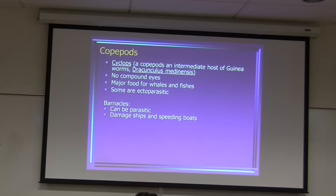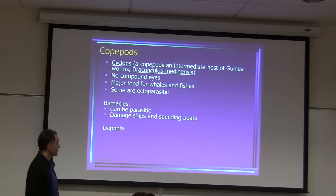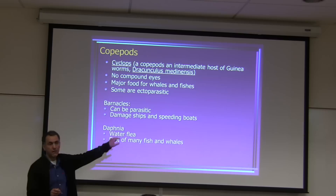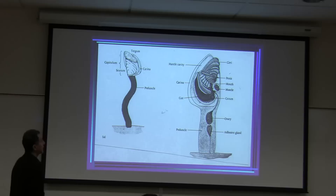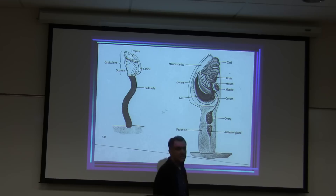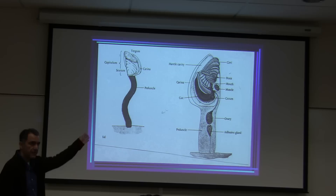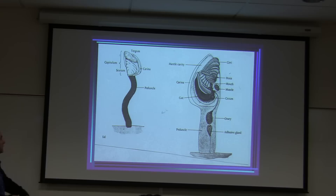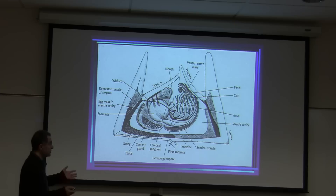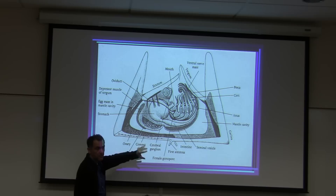Daphnia, commonly called water fleas, are available in the lab for microscope observation. There are parts in your slide description you need to identify for water fleas. They are an important diet for many fish and whales. Barnacles were thought to be mollusks for a long time, but were recently reclassified into arthropods because of greater structural similarities to arthropods.